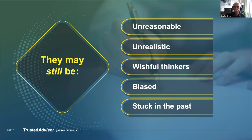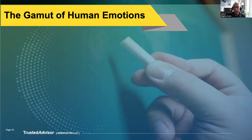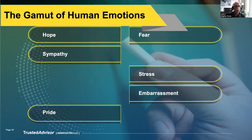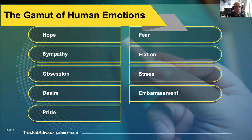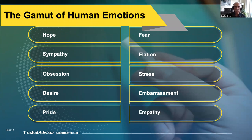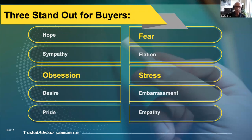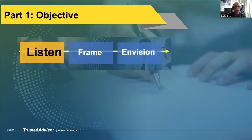If we reframe things, they can still be unreasonable, biased, or stuck in the past — but they're not crazy. They, like us, run the gamut of human emotions: fear, sympathy, stress, hope, embarrassment, pride, obsession, elation, desire, empathy. All these things pop up in daily life, inside and outside work. When we talk about dealing with an irrational buyer, more than likely we're going to be dealing with fear, stress, and obsession — those are the typical emotions you're faced with.